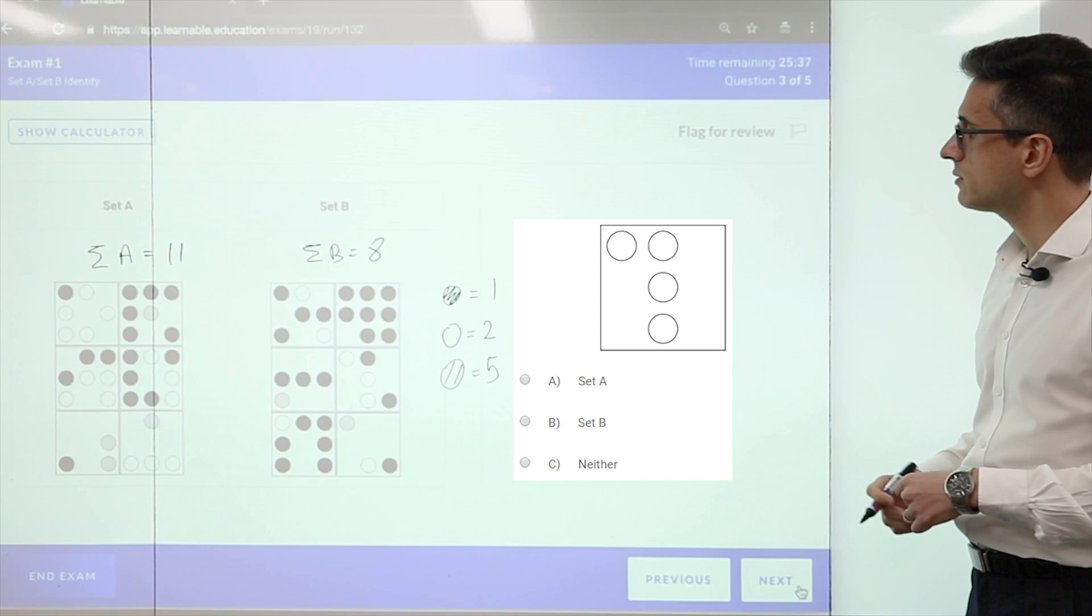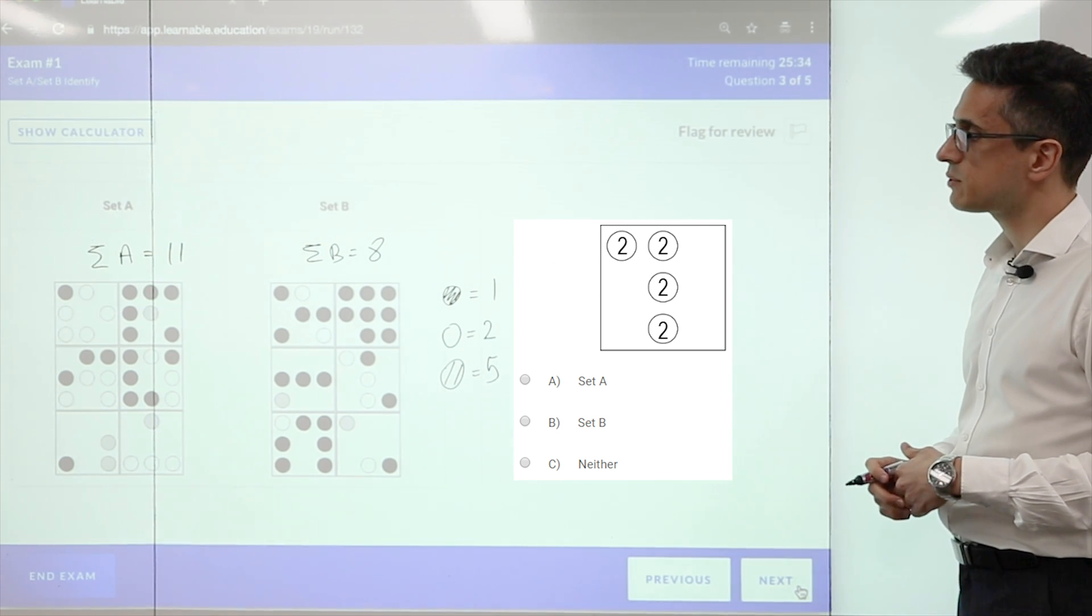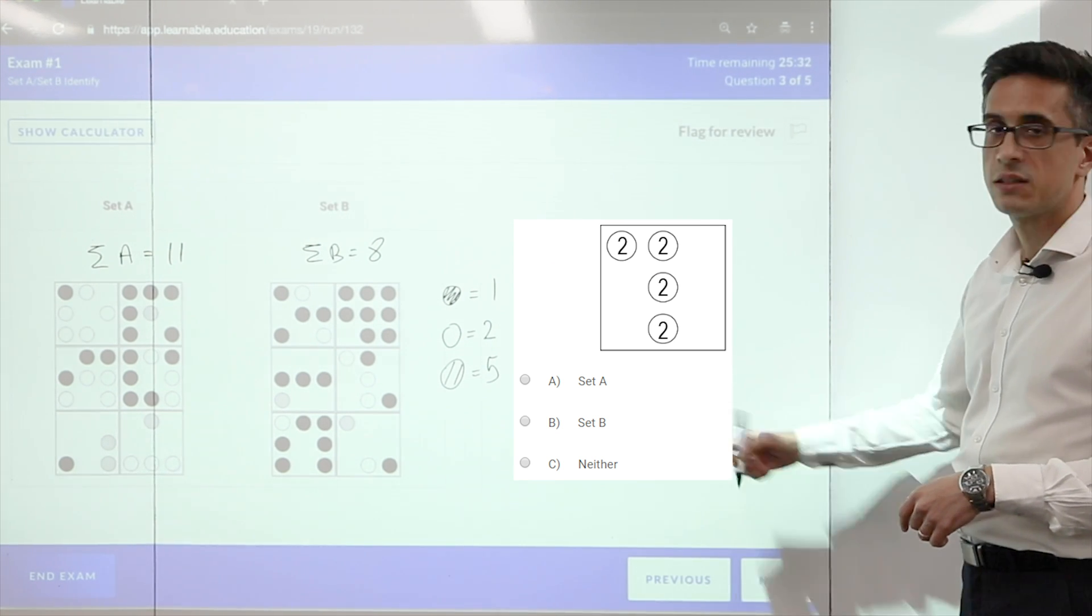For the third question, we have 4 white circles, so 4 times 2 is 8, 8 belongs to set B.